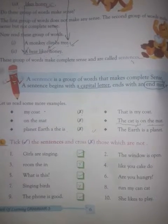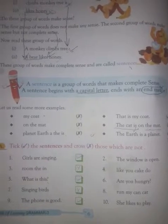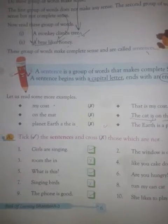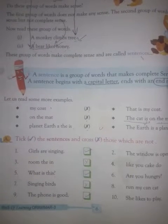'Girls are singing' — yes, this is a sensible sentence. 'Room the in' — no, this is wrong. 'What is this?' — this is an interrogative sentence, so it is correct. 'Singing bird' — no, these words give some sense but not complete sense, so this is not a sentence.